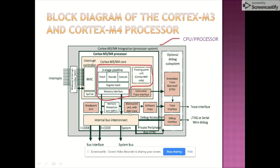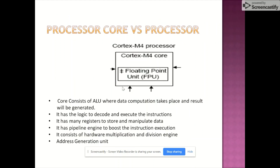The question that may immediately trigger in your mind is: what exactly is inside the Cortex-M4 core? The Cortex-M4 core is actually the basic computational engine of the processor. It consists of its own register set, an ALU where data computation takes place, a parallel shifter to perform fast multiplication and division, a pipeline engine to boost and fasten instruction execution, and various registers to manipulate data, including special function registers to track the execution state of the core.